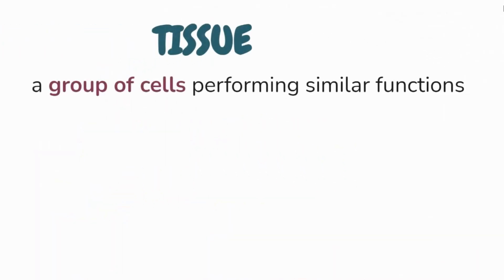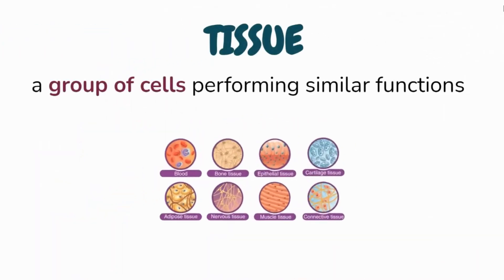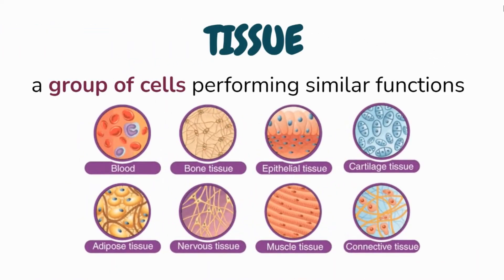Tissue is a group of cells performing similar functions. There are four types of tissue: epithelial tissue, connective tissue, muscle tissue, and nervous tissue. A histologist is an example of a biologist that works at this level.